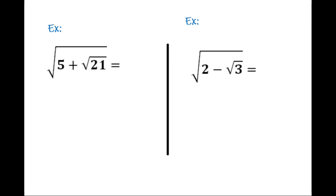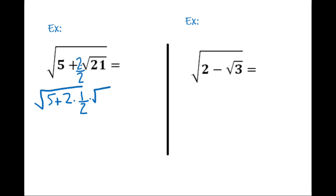We have two more examples where there is no 2 in front of the second root. To apply our method, there must be a 2, so we multiply the term by 2/2. We write the expression as 5 plus (keeping the 2 in front) and then (1/2)·√21.